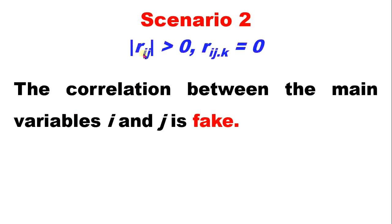For example, the zero-order correlation between I and J is 0.8. If we introduce a controlling variable and it becomes zero, that correlation is a fake relationship. The correlation between the main variables I and J is fake. For example, light and plant growth correlation is 0.8. When soil type is introduced as controlling variable K, if it becomes zero, that reveals a fake relationship — not a real one.